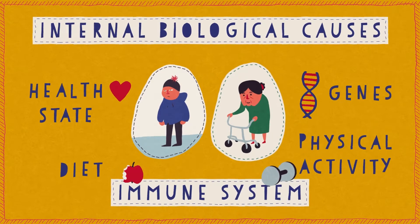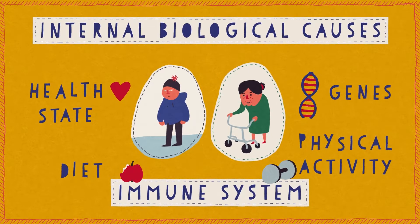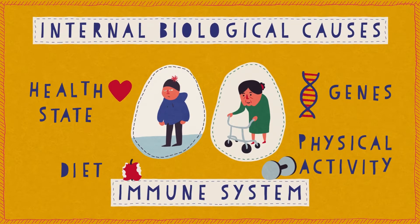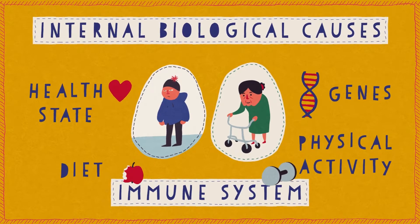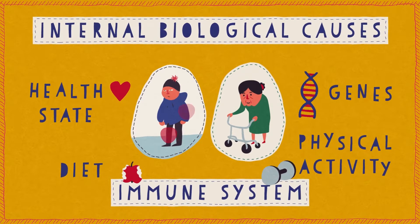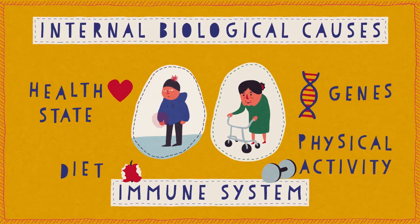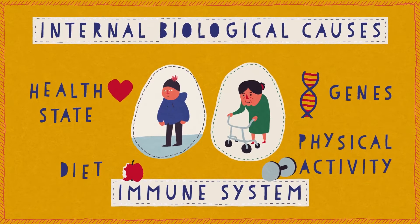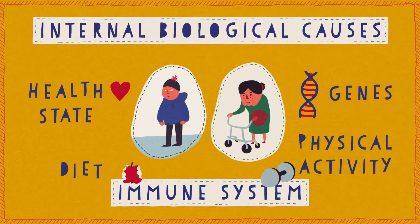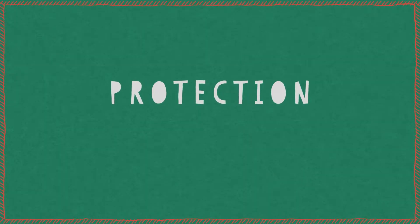For example, arthritis can result from our body's reaction to injury caused by overuse of our joints. And some other diseases, such as sickle cell anemia, are inherited through our genes.